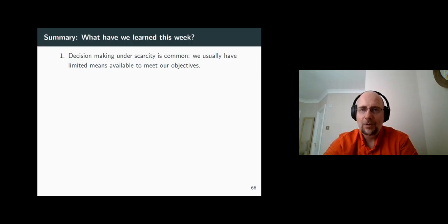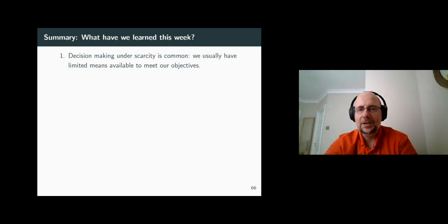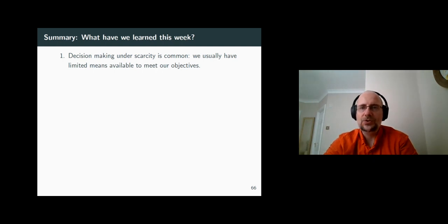What we think happened can be formalized using the so-called constrained optimization, a technique widely used in economics today to explain choices that economic agents make under scarcity. Our objectives and wants are unlimited in this framework, but our abilities to reach those objectives are limited. So the key question we addressed this week was how to do the best we can, given our constraints.